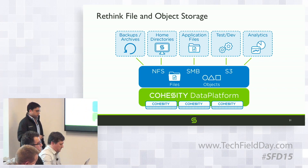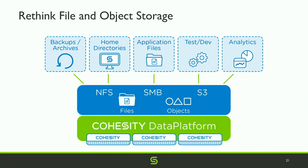With QoCity, the goal is to converge all your secondary storage needs into a single platform — backups, filer use cases, test and dev, analytics, and object store. You can dump data via NFS for backups or archiving, then expose that same dataset for analytics via S3 to a Spark job, and also assign data to your dark data.